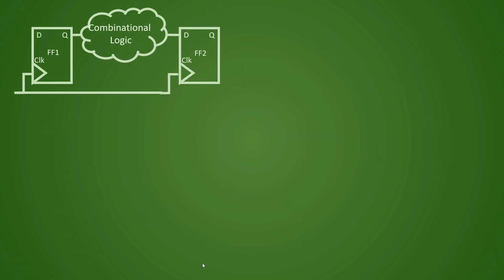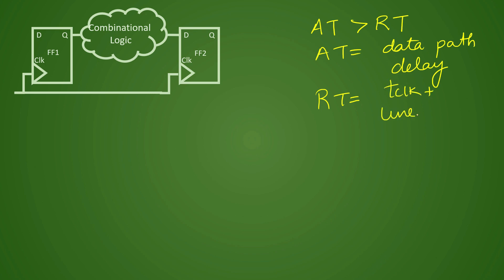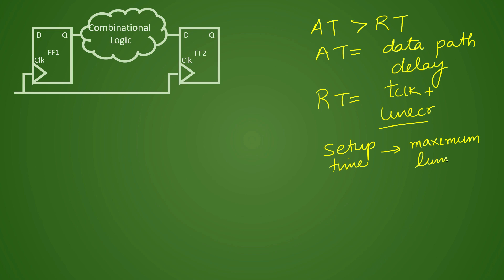If you have watched the previous video, then you already have some idea about setup timing and hold timing violations. A setup timing violation occurs when your arrival time is greater than your required time. Arrival time is your data path delay, which consists of flip-flop TCQ delay plus combinational logic. Required time is your clock period minus the uncertainty portion — that is, clock-related skew and jitter values. Setup time violation specifies how much maximum allowed time is there for the data path — it is the maximum limit for your arrival time. Hold time violation specifies the minimum limit — the minimum value that the data path should take.